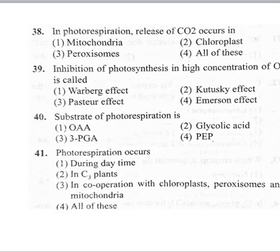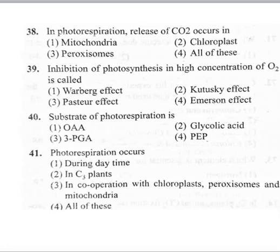Coming to the 38th question: in photorespiration, release of carbon dioxide occurs in option 1 mitochondria, option 2 chloroplast, option 3 peroxisomes, option 4 all of these. Photorespiration is a process in which plants take in oxygen and release carbon dioxide, which occurs in the mitochondria. So the release of carbon dioxide in photorespiration occurs in the mitochondria.